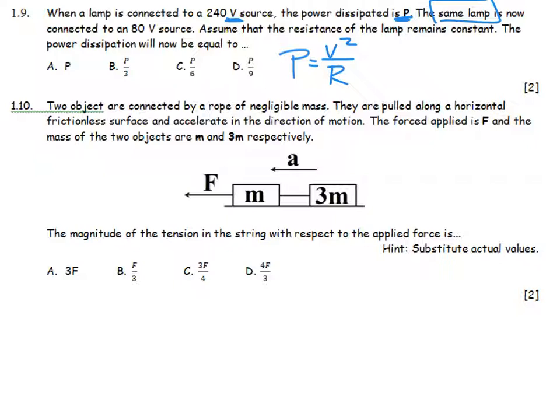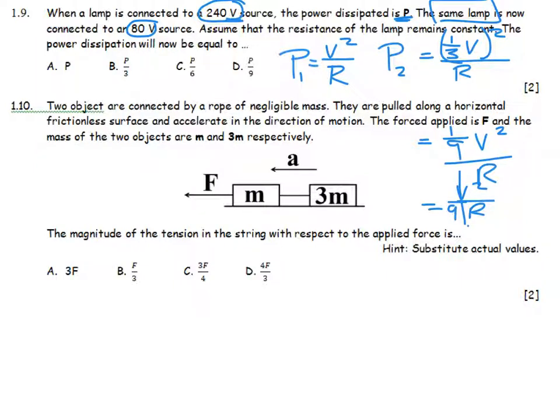Power dissipation will now be equal to... I have taken 240, I have got 80, which means I have one third of the original potential difference. So the first power, my new power is equal to 1 third of V squared divided by R. And that is equal to 1 ninth of V squared over R, which is really V squared over R divided by 9, which is the same as the original power divided by 9.